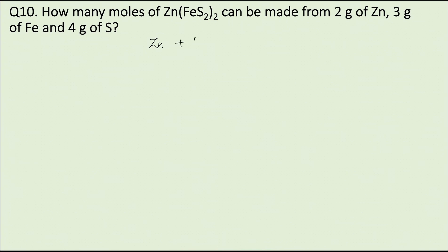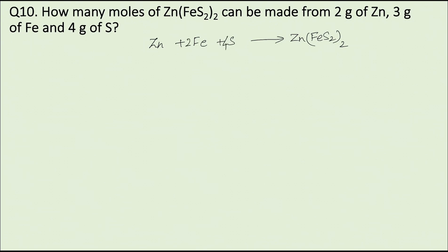Zn plus iron plus sulfur forming Zn(FeS₂)₂. Balancing the equation: the coefficient of iron will be 2 and the coefficient of sulfur will be 4.